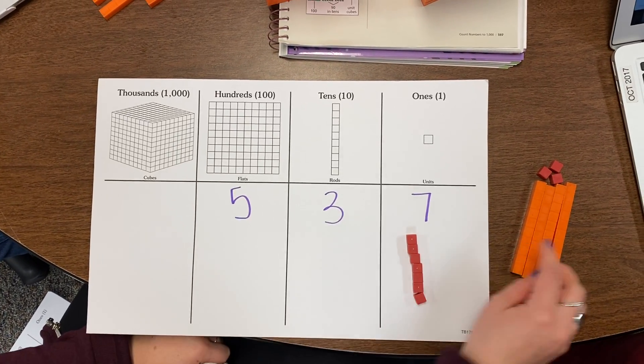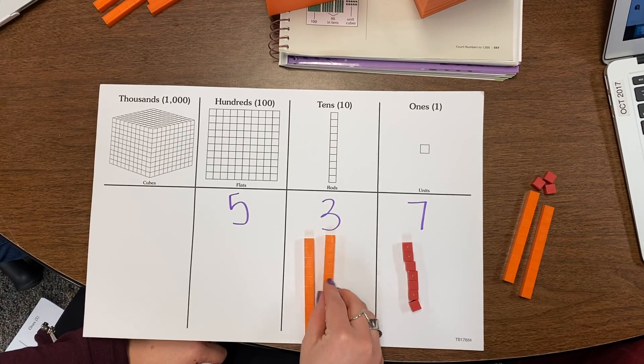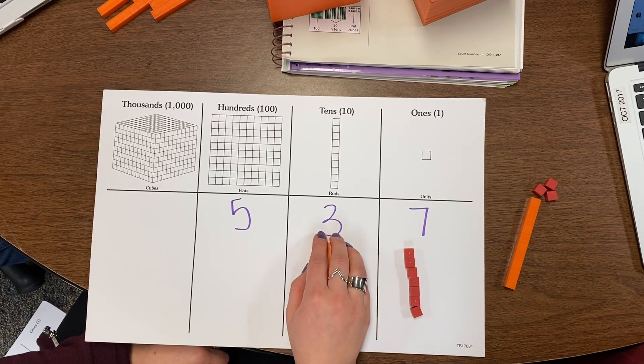All right. Now we need 3 10's sticks. So we have 10, 20, 30. 3 10's is 30.